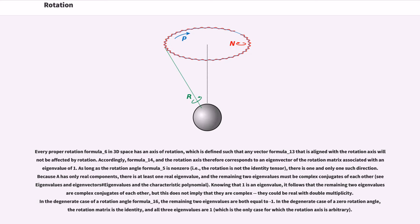Every proper rotation in 3D space has an axis of rotation, which is defined such that any vector that is aligned with the rotation axis will not be affected by rotation. Accordingly, the rotation axis corresponds to an eigenvector of the rotation matrix associated with an eigenvalue of 1. As long as the rotation angle is non-zero, there is one and only one such direction.